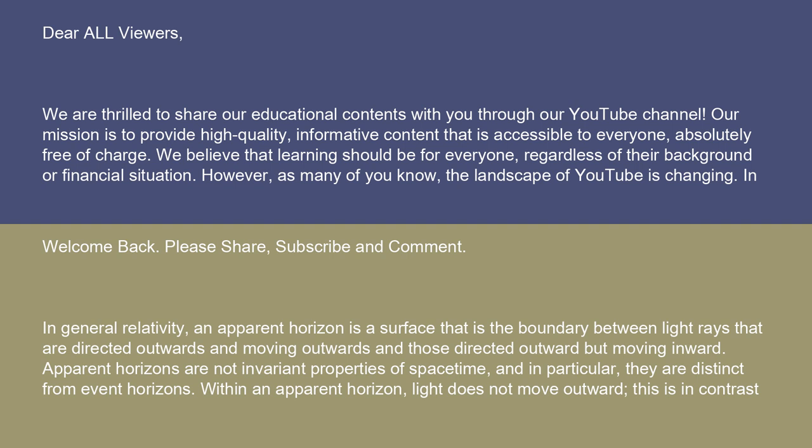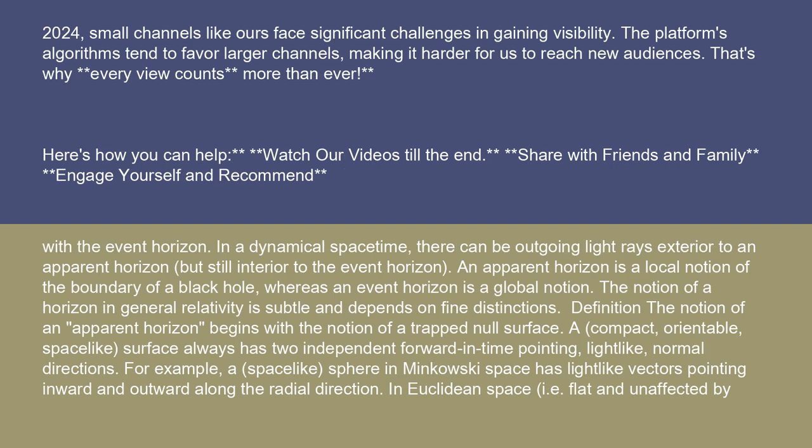Within an apparent horizon, light does not move outward. This is in contrast with the event horizon. In a dynamical space-time, there can be outgoing light rays exterior to an apparent horizon but still interior to the event horizon. An apparent horizon is a local notion of the boundary of a black hole, whereas an event horizon is a global notion. The notion of a horizon in general relativity is subtle and depends on fine distinctions.